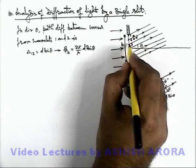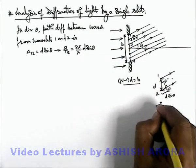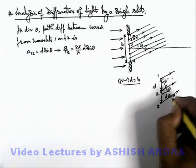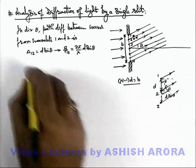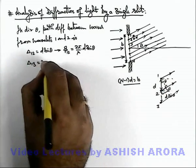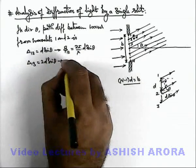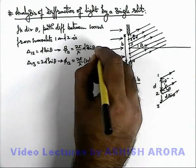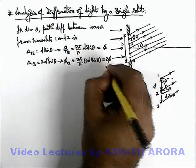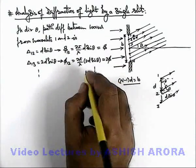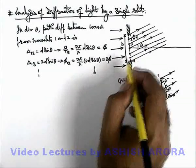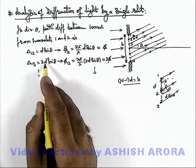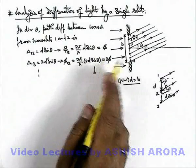Similarly, if we talk about wavelets 1 and 3, the total path difference will be twice that between 1 and 2, so Δ between 1 and 3 is 2d sinθ, and the corresponding phase difference is (2π/λ) × 2d sinθ, which equals 2φ, and so on. Correspondingly, up to the n-th wavelet, the path difference will be (n−1)d sinθ and the corresponding phase difference will be (n−1)φ.